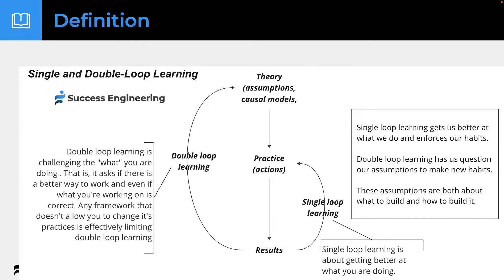Here's another way to show single and double loop learning. You've got theory, practice, and you see what happens. Single loop learning is about getting better at what you're doing — like estimating better or defining sprint goals more clearly. It actually enforces your habits. Double loop learning has you question your habits — maybe we shouldn't be doing sprints, maybe we should try more cross-functional teams.